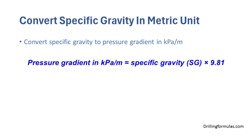Convert specific gravity to pressure gradient in kilopascal per meter. Pressure gradient in kilopascal per meter is equal to specific gravity multiplied by 9.81.